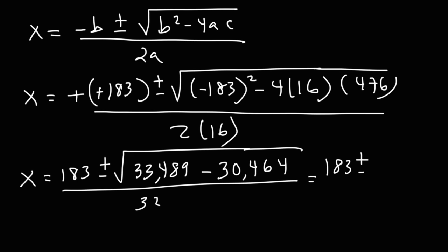33,489 minus 30,464, that's 3,025. The square root of 3,025 is 55.